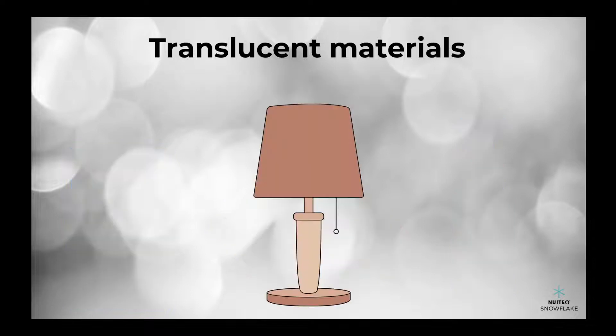Have you ever seen a lampshade that has a soft, diffused light coming out of it? That's because it's made of a translucent material.